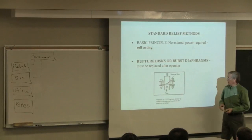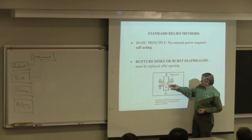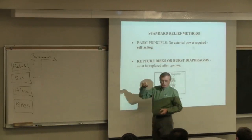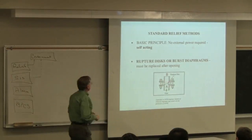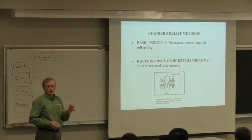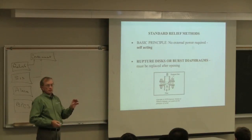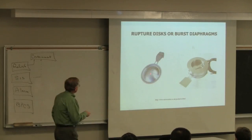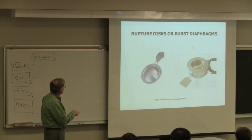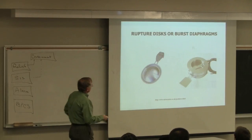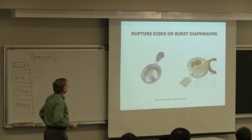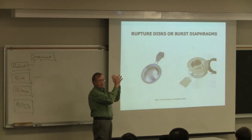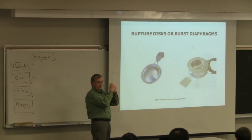The rupture disk is a metal device inserted in a pipe—it's the weak link, the weakest part of the mechanical system, engineered to break at a certain pressure. You have to buy these disks from the manufacturer. You can see scoring on the disk surface to ensure it breaks at a certain point. It's installed between two flanges. Once a rupture disk breaks, it doesn't reseal, so you have to shut down the process and replace it.